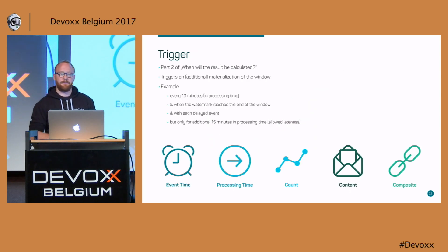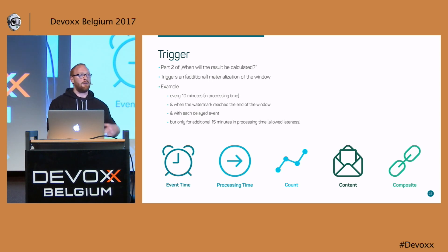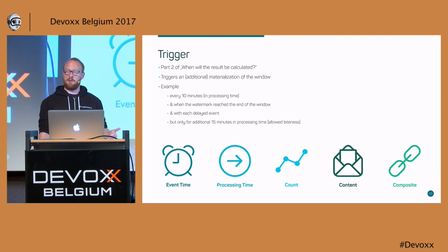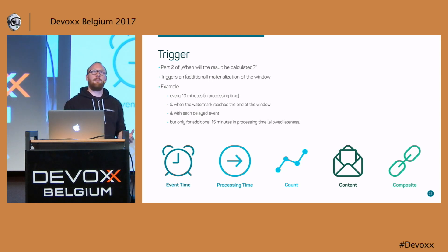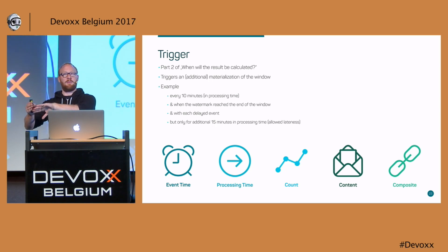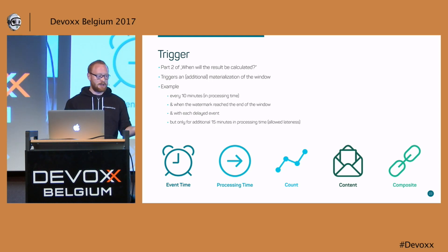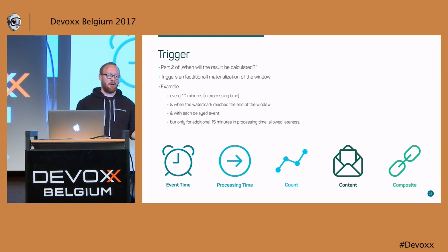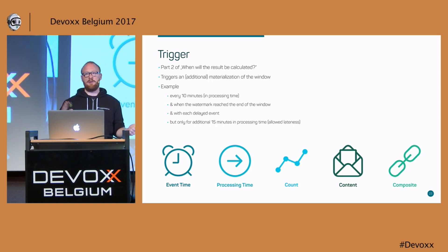The second part is the trigger — which defines when to actually emit results. Besides the watermark, triggers can fire based on processing time, event count, or content. For example: every 10 minutes during a one-hour window (early firings), once at the watermark, and for up to 15 minutes after the watermark for late events, after which they are dropped.